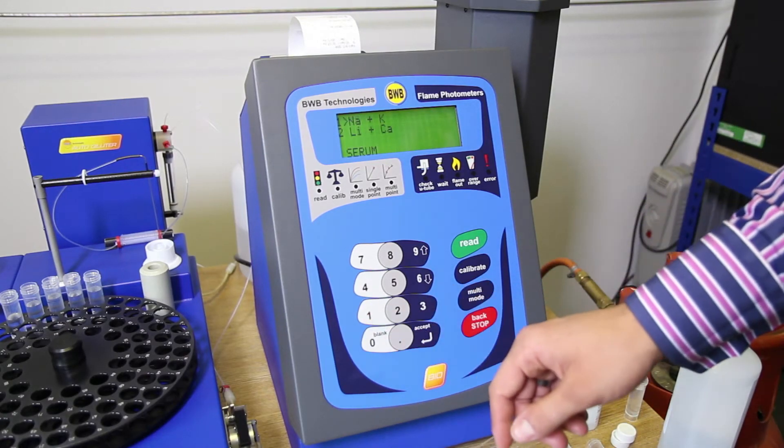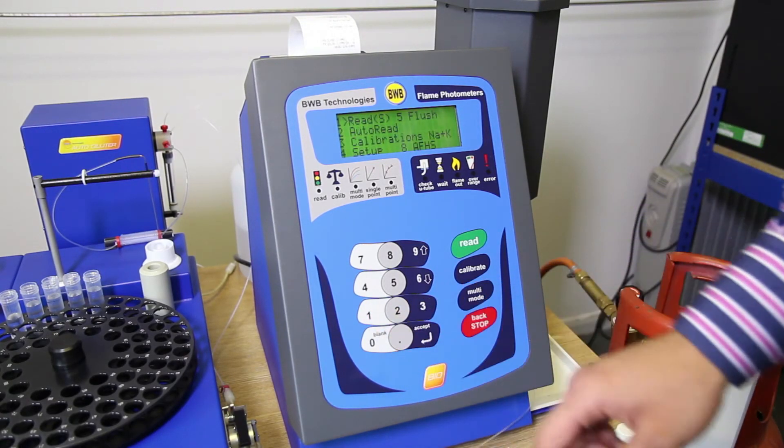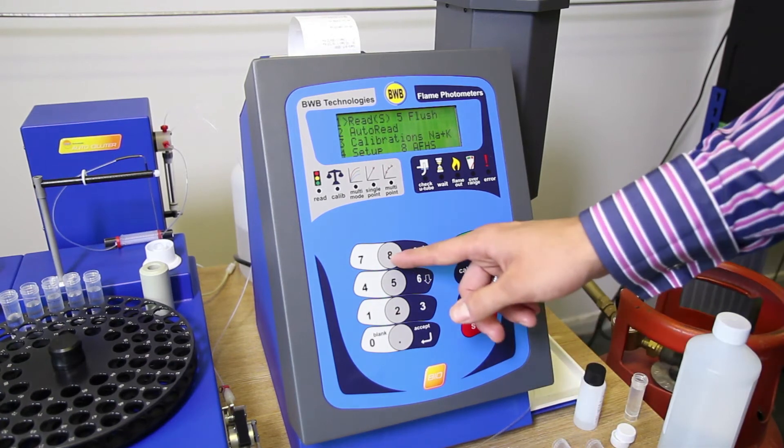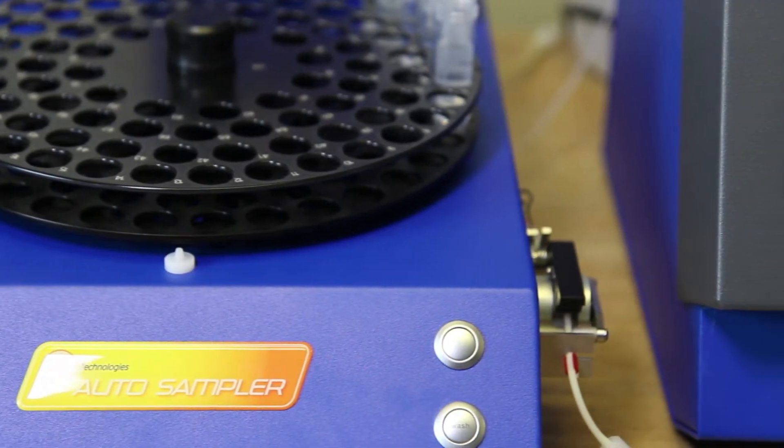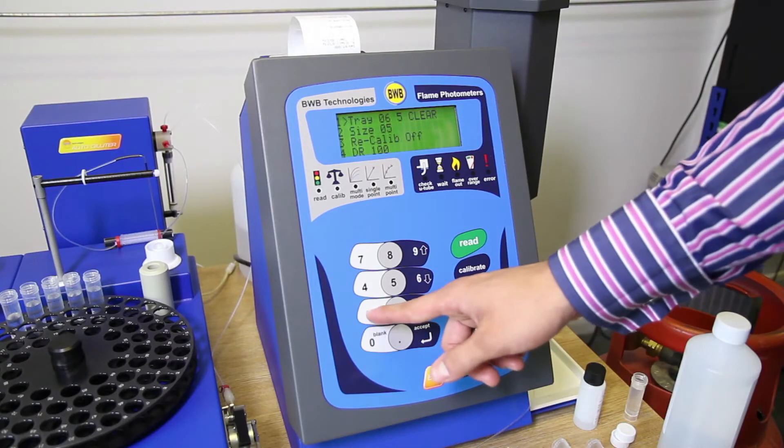From the main menu select serum or urine and your ions of interest. Select number 8 AFHS. Note AFHS interface must be on. Now choose tray setup.